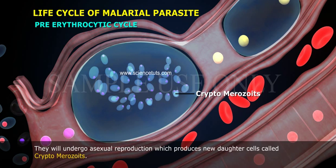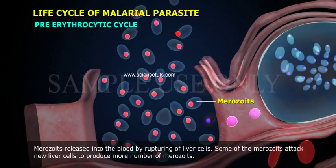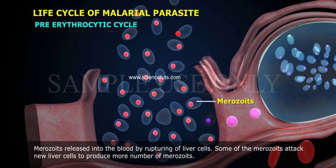The cryptoschizonts undergo asexual reproduction, which produces new daughter cells called cryptomerozoites. These merozoites are then released into the blood by rupturing of the liver cells.